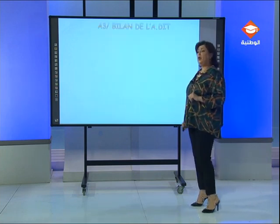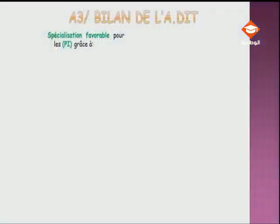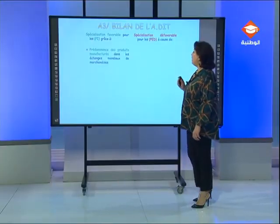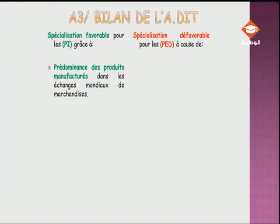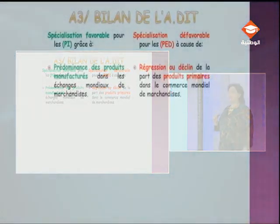Dressons maintenant le bilan de l'ancienne DIT. D'un côté, on a une spécialisation favorable chez les PI grâce à plusieurs facteurs. De l'autre côté, on a une spécialisation malheureusement défavorable du côté des PED. On va énumérer les facteurs favorables qui ont amené les PI à une situation favorable, et les facteurs qui ont bloqué la situation des PED. Premier élément : ceci s'explique grâce à la prédominance des produits manufacturés dans les échanges mondiaux de marchandises pour les PI, et à cause du déclin de la part des produits primaires dans le commerce mondial de marchandises pour les PED — idées ramenées de la section concernant l'évolution de la structure des échanges par produit.